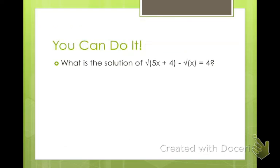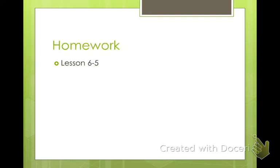For the next practice problem, you're going to do the same thing: add the square root of x to the other side, square both sides making sure to FOIL the right side, simplify, get the square root by itself again, square both sides again, then simplify and factor from there. It's a lot of work, but pretty doable. And that's your lesson for 6-5 — hope you have a great night.